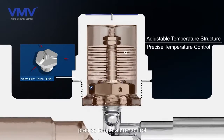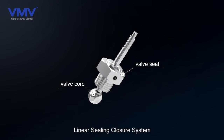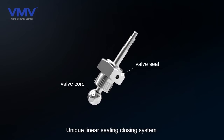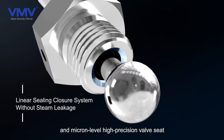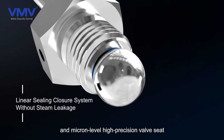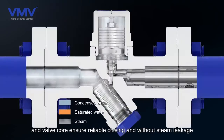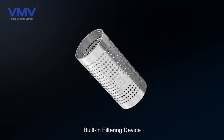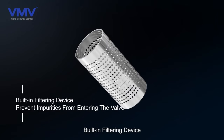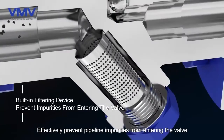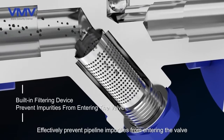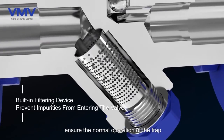A unique linear sealing closure system with micron-level high-precision valve seat and valve core ensures reliable closing without steam leakage. A built-in filtering device effectively prevents pipeline impurities from entering the valve, ensuring normal operation of the trap.